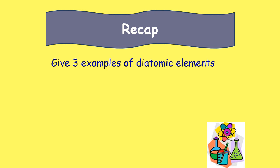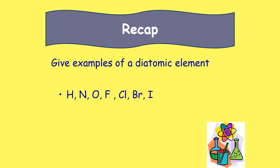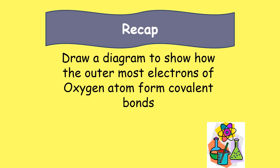There are seven diatomic elements, so any three will do: hydrogen, nitrogen, oxygen, fluorine, chlorine, bromine, or iodine. Finally, try drawing a diagram showing how the outermost electrons of oxygen atoms form covalent bonds — that's one to have a go at yourself.